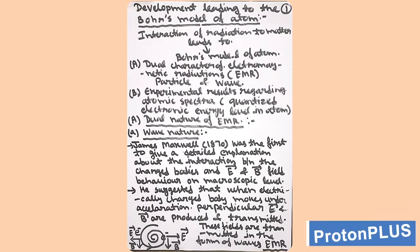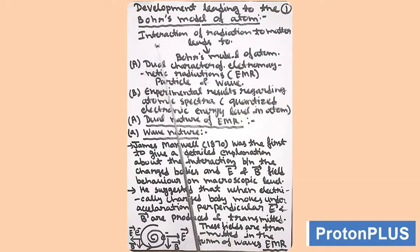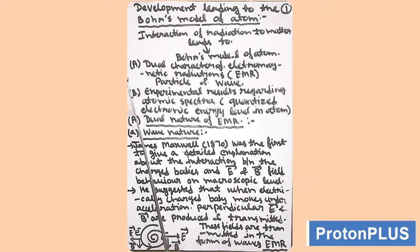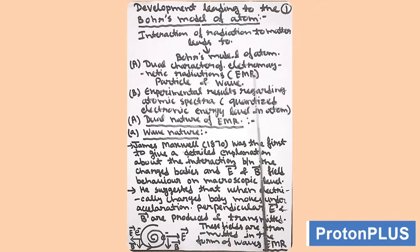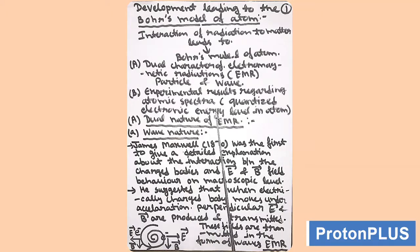Today we will start with Bohr's model of atom. First, we will discuss the developments leading to Bohr's model of atom. There is interaction of radiation and matter, and these interactions will lead to Bohr's model. Related to these interactions, we will study about the dual character of electromagnetic radiation (EMR) — that is, particle and wave. Second is experimental results regarding atomic spectra, that is, quantized electronic energy levels in atom.